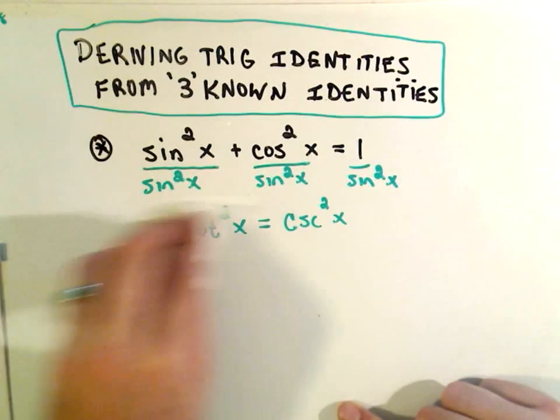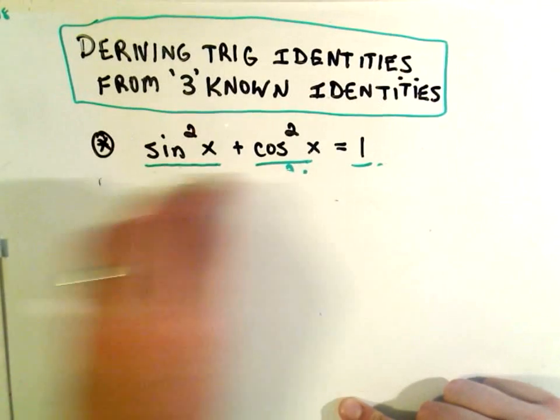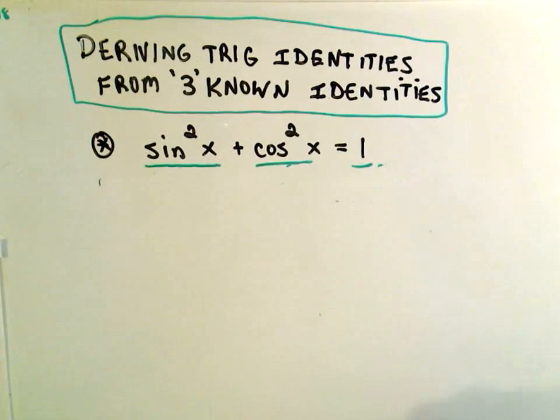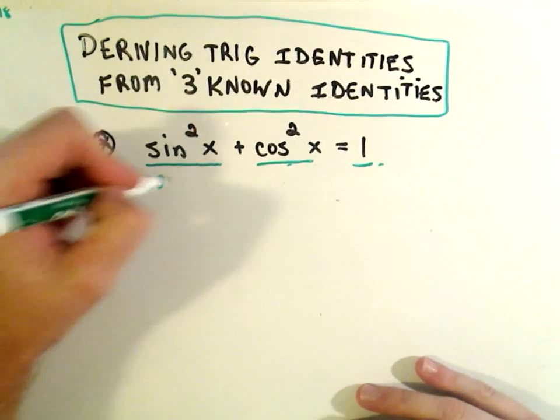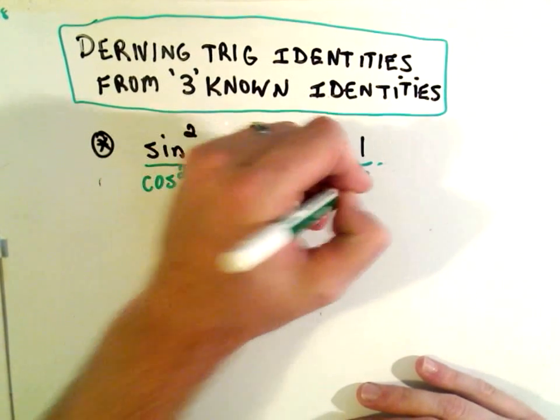Okay, the next one you can get is—well instead of dividing by sine squared, you can divide everything by cosine squared. So we'll divide this original identity by cosine squared, the exact same idea.